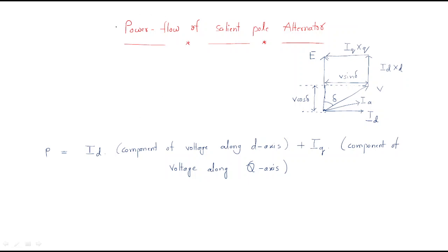Hello everyone. In this session we will discuss the power flow of salient pole alternator. Generally we have two types of alternator: one is the cylindrical pole and another one is the salient pole. In this session we will discuss power flow of salient pole alternator and how much power is developed across the salient pole alternator.